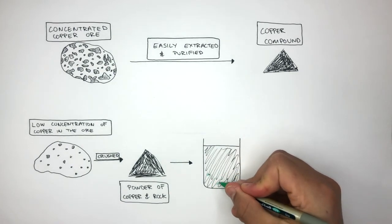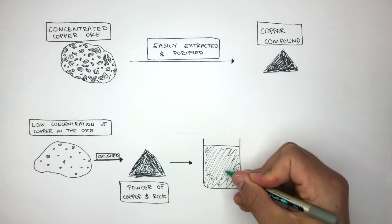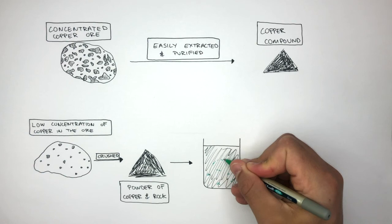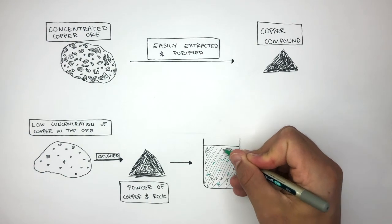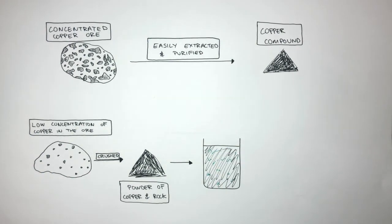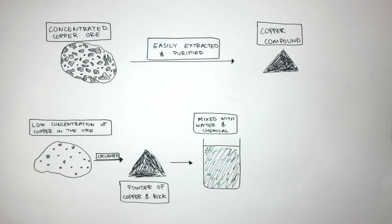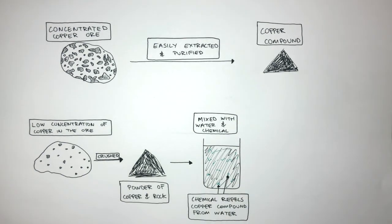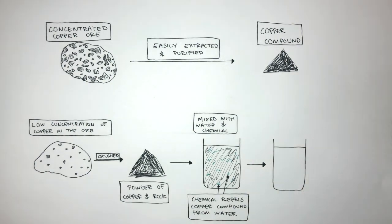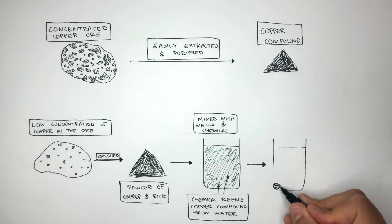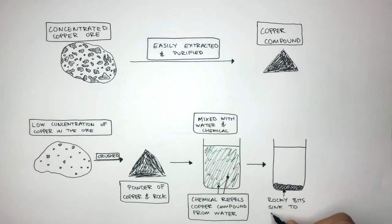A chemical is then added, which repels the copper compound from the water and forces the copper compound upwards. So the powder of copper and rock has been mixed with water and the chemical. And we already know the chemical repels the copper compound from the water. So in the next stage, the beaker has now been left for a while. And we can see from the diagram, the colored substance at the bottom represents how the rocky bits sink to the bottom.